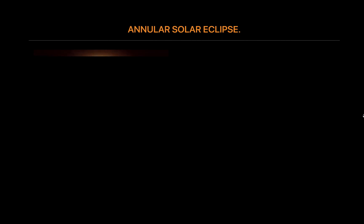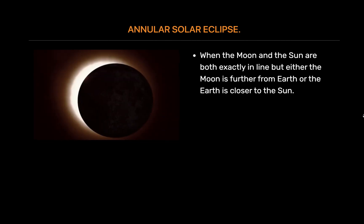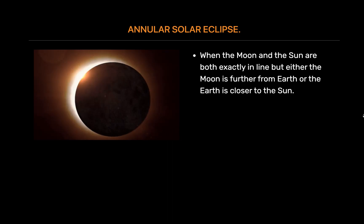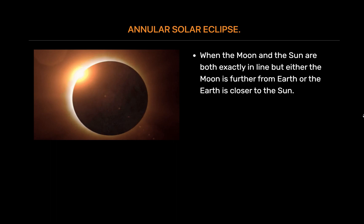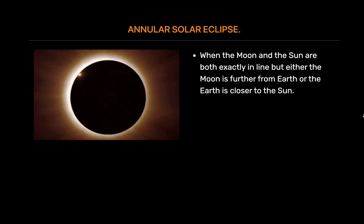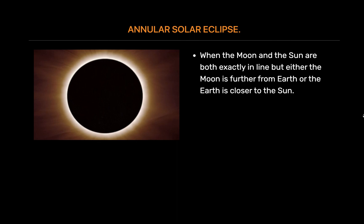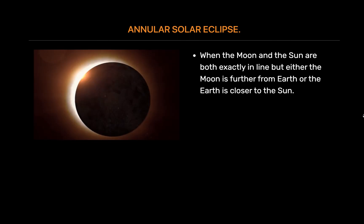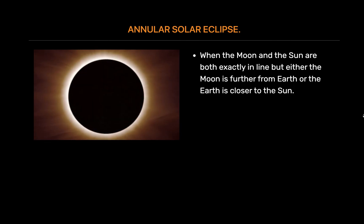Annular solar eclipse. This is when the Moon and the Sun are both exactly in line but either the Moon is further from Earth or the Earth is closer to the Sun. When this happens, the apparent size of the Moon is smaller than that of the Sun, and the Sun then appears as a very bright ring, or annulus, surrounding the dark disk of the Moon.